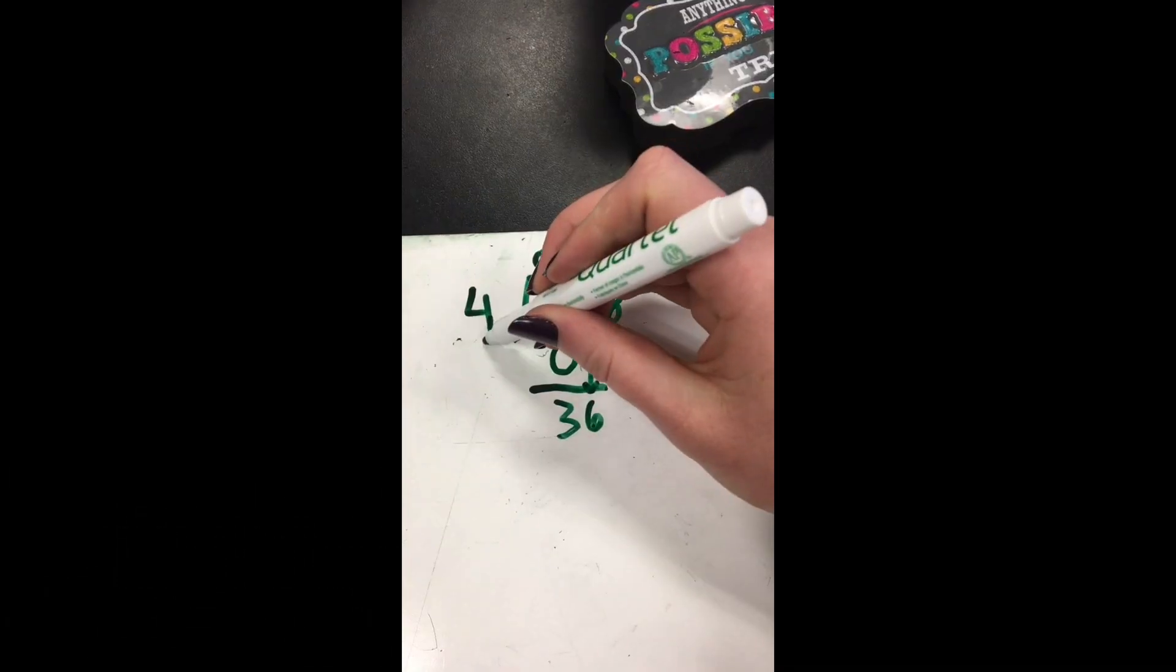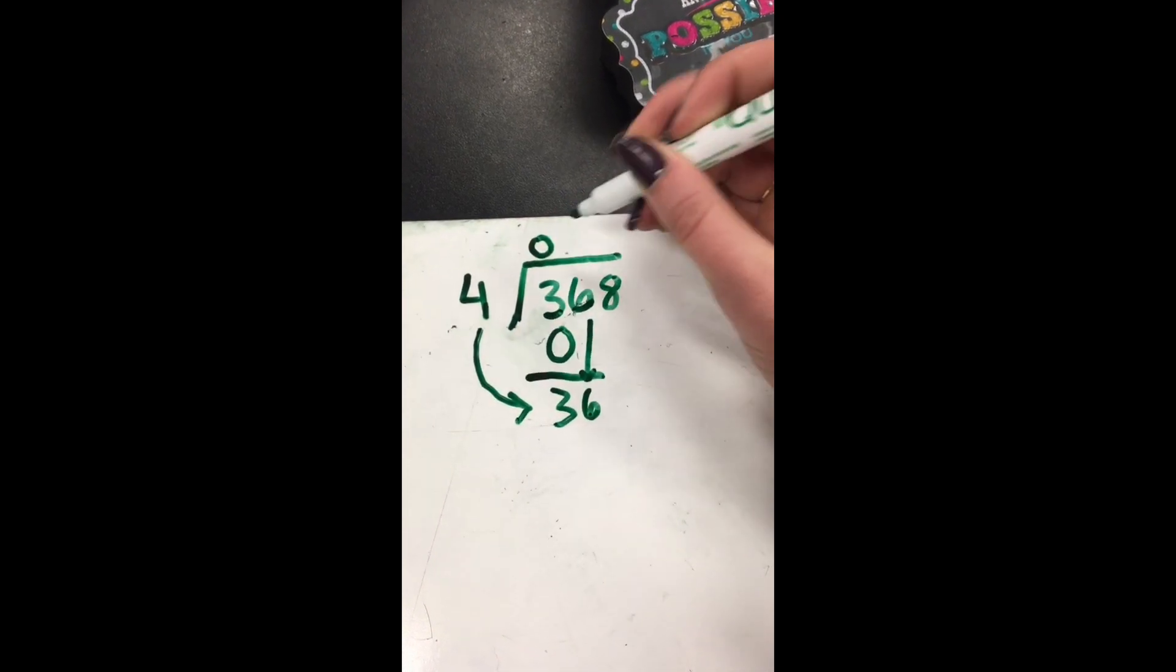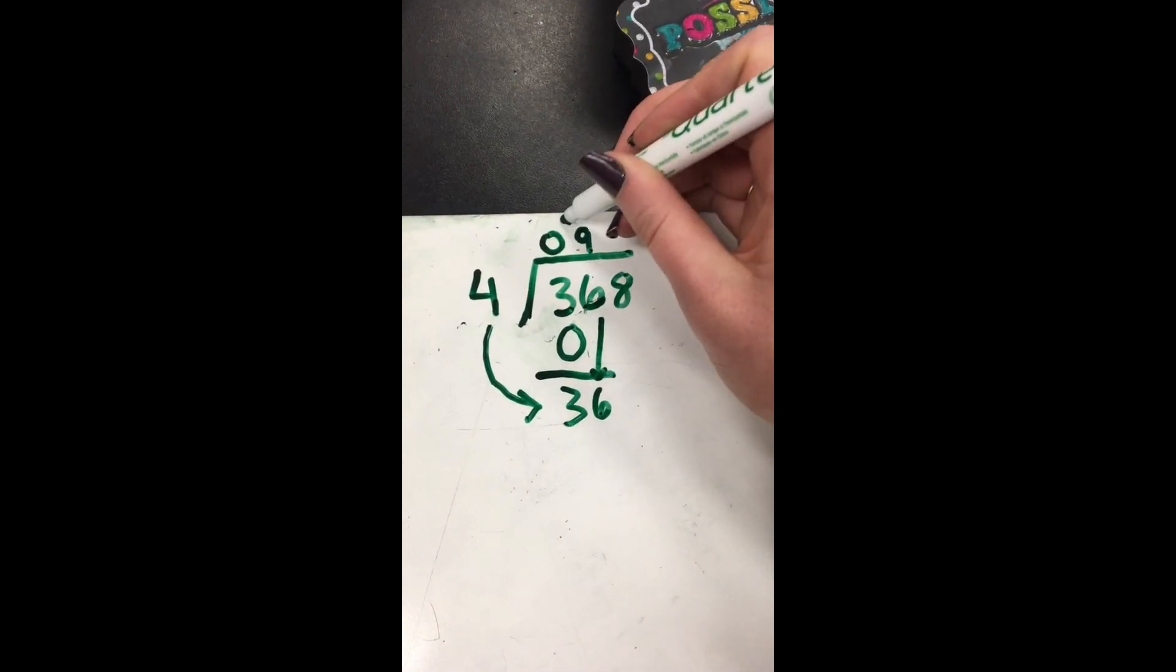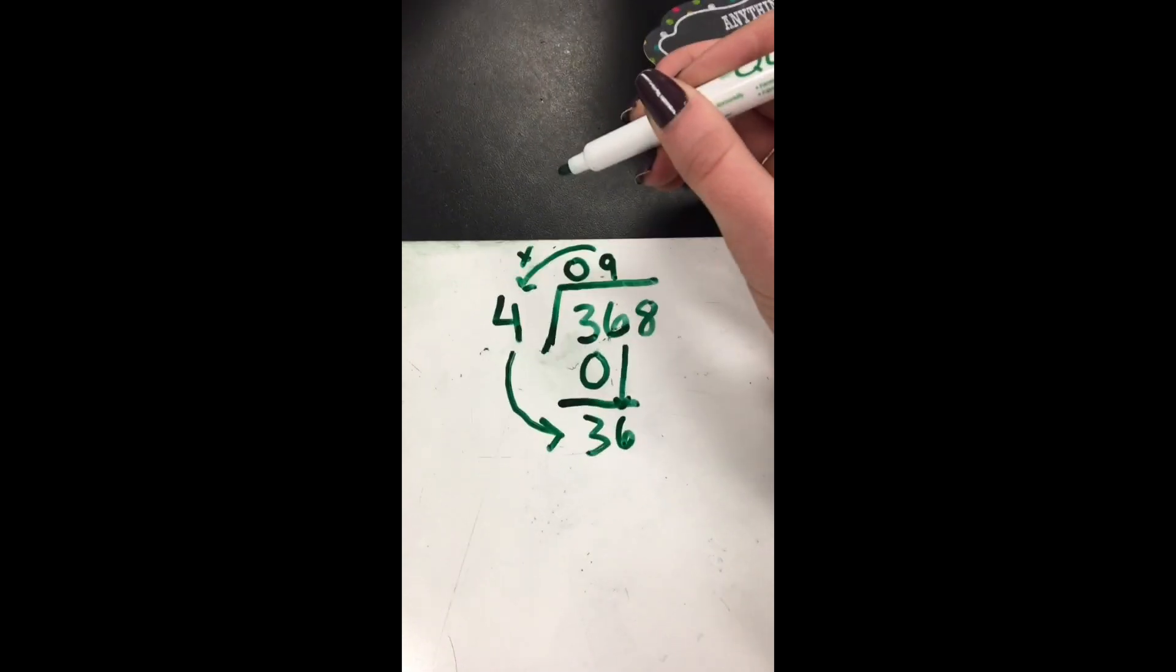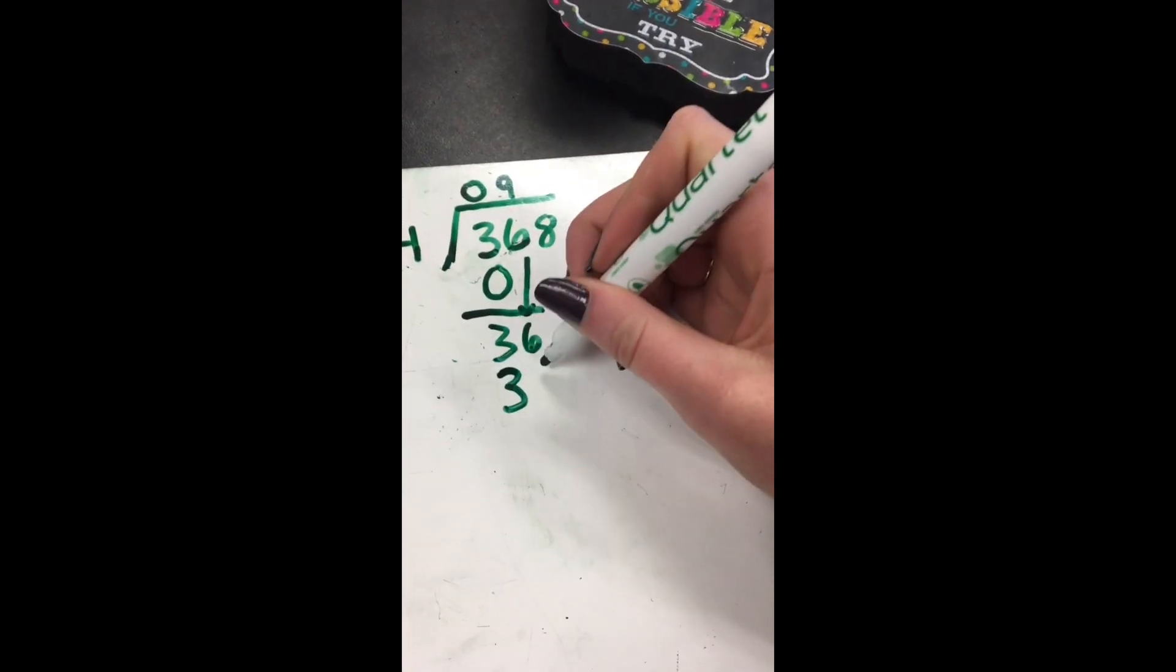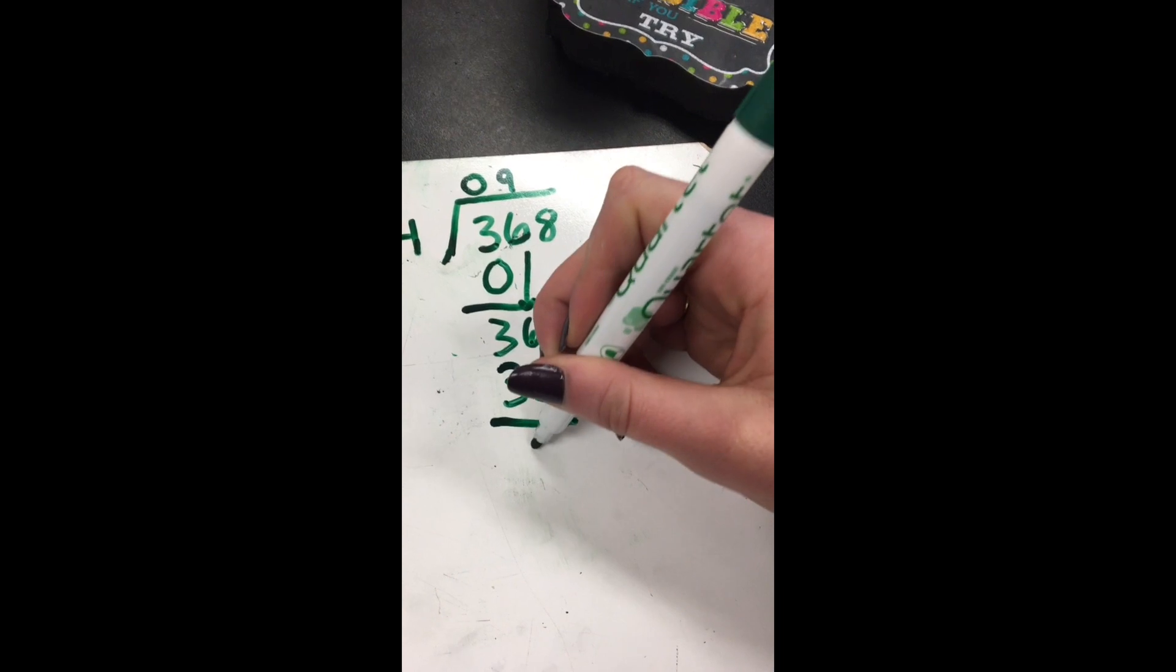Now take your divisor and use it again for the new number. See how much it fits in. Once again, take that answer up above and multiply by the divisor to show it some love. Bring the product down again like you did before. Subtract the bottom from the top, you'll find an answer once more.